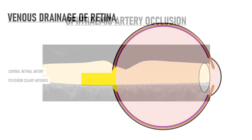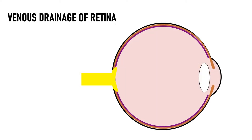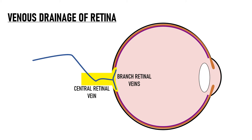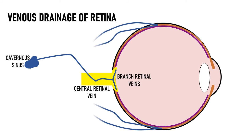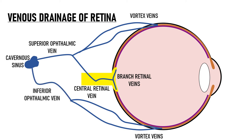Now let's talk about the venous drainage. Just like arterial supply, there are two separate routes of venous drainage. Venous drainage of the inner retina starts from the branch retinal veins, which drain into the central retinal vein. The central retinal vein exits the globe through the optic nerve and emerges out of its meningeal sheath to drain into the cavernous sinus. Drainage from the outer retina and the choroid occurs via the vortex veins, usually seven in number, which exit the sclera at the equator and drain into the superior and inferior ophthalmic veins, eventually draining into the cavernous sinus.